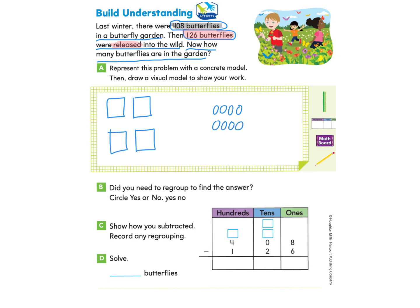Now we're going to look at the number of butterflies that were released — it was 126. We're going to start with the ones column and subtract 6 ones. Then we're going to look at the tens column. They need us to subtract 2 tens, but we don't have any tens. So we're going to need to regroup.